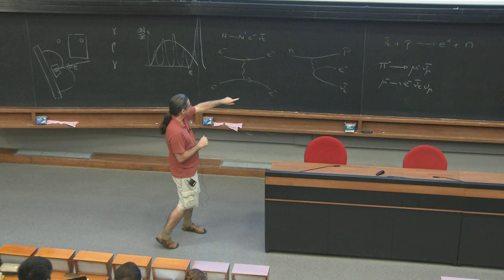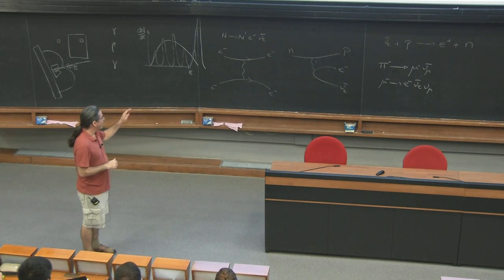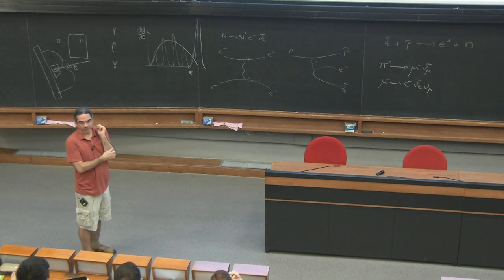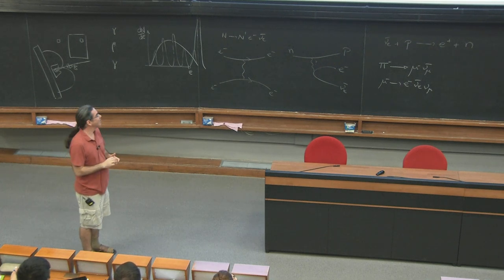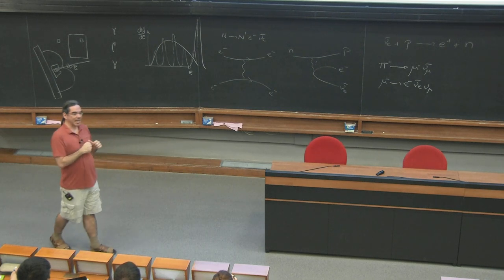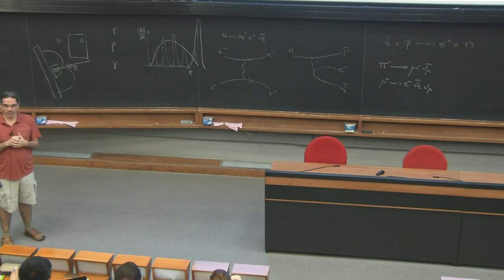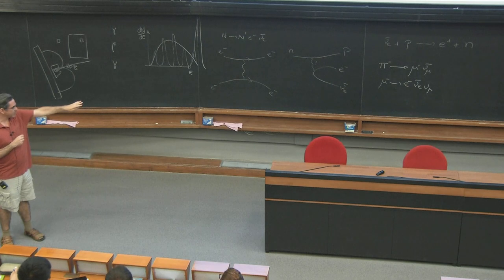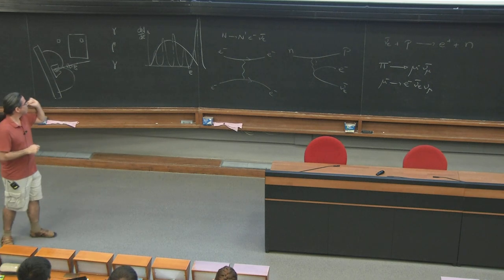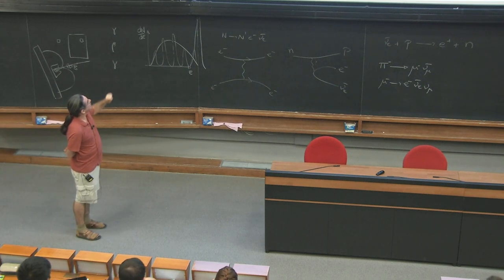People figured out that all these different processes — pion decay, muon decay, and beta decay — could be explained by the equivalent of Fermi's theory, up to order-one factors figured out much later. That was a big deal because it gave some universality to the weak interactions. It's not like there's one kind of weak interaction for pion decay, one for beta decay, and one for muon decay — these are all manifestations of the same interaction.